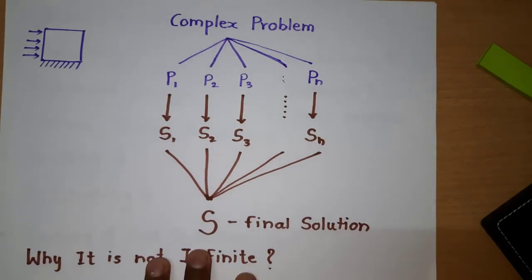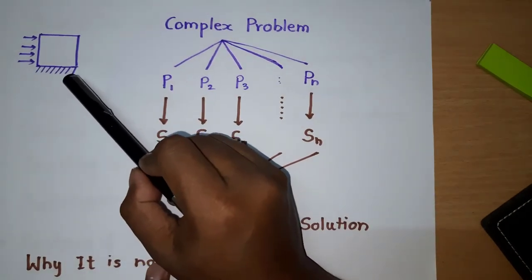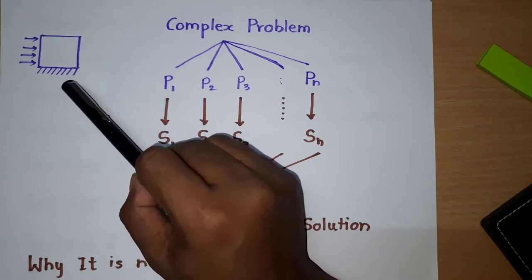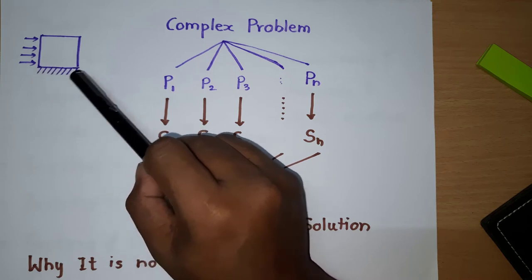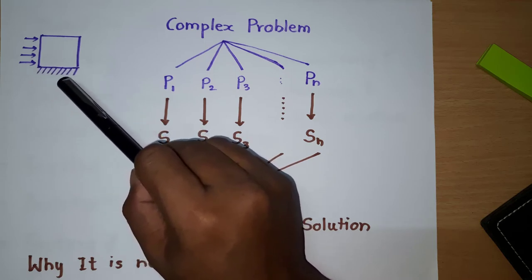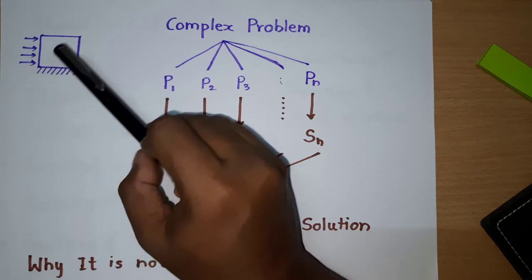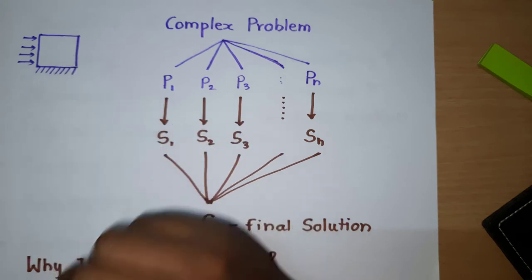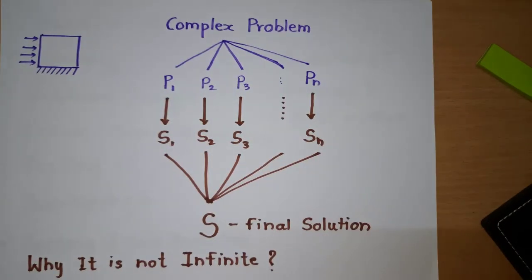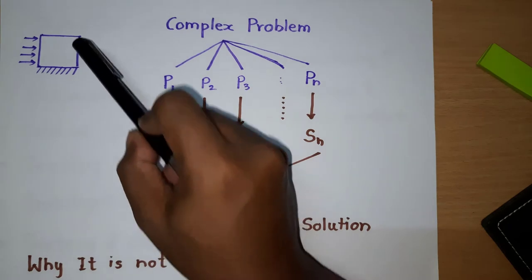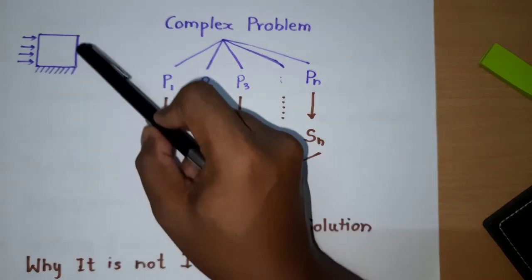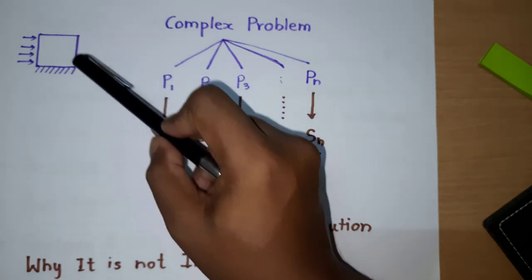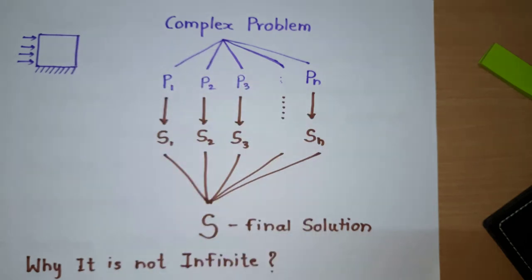So how he solved this problem? When he divided this into number of blocks, this is the last block of that problem, where all the lines at the bottom have fixed support and this is having the water pressure. On these two edges, he has given the boundary conditions which are related to the next block and this block. So not all the edges are fixed. There are some free degrees of freedom.